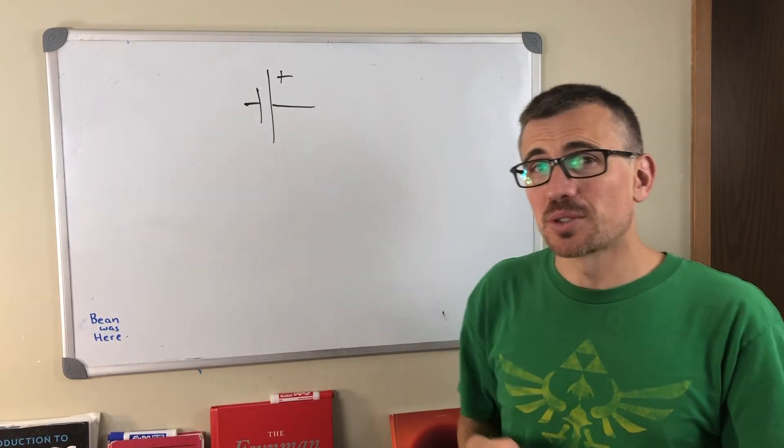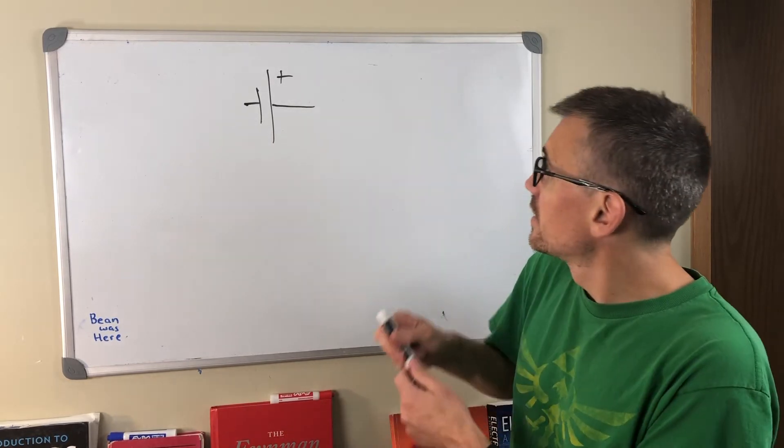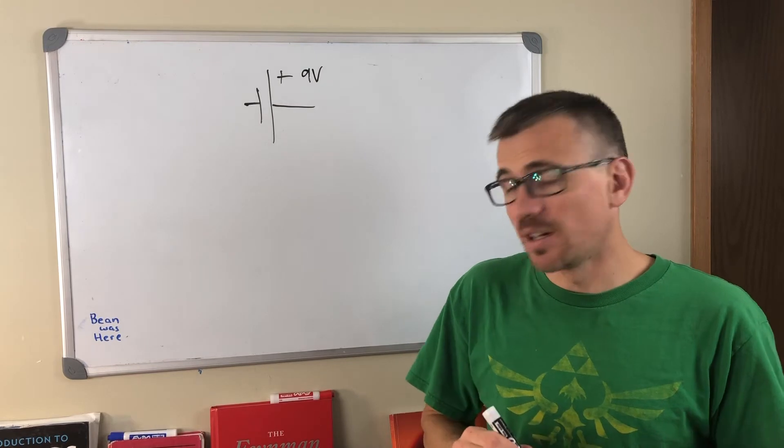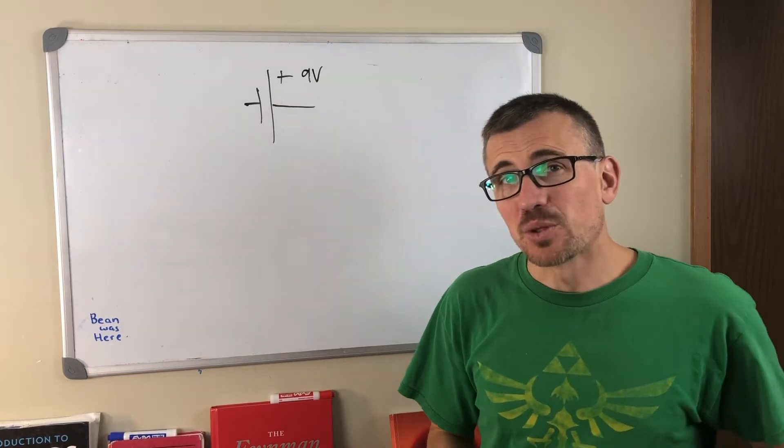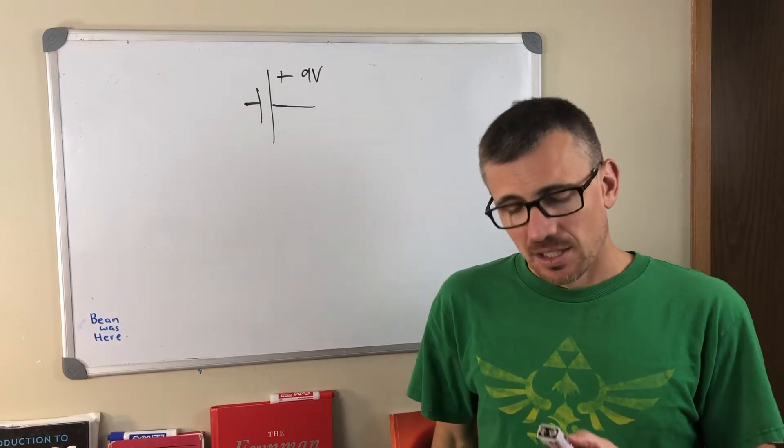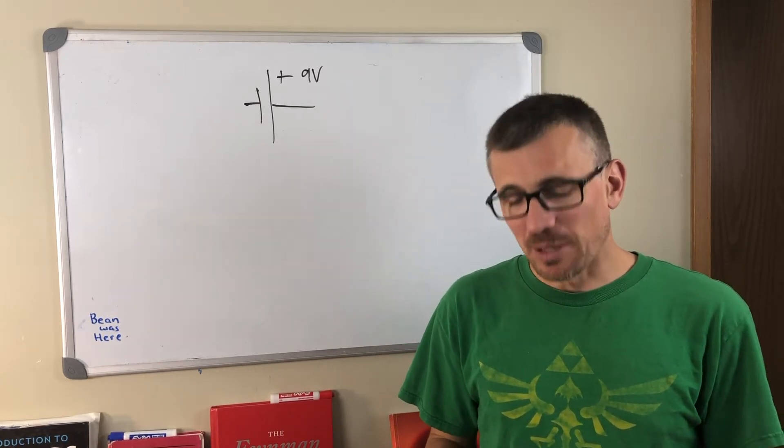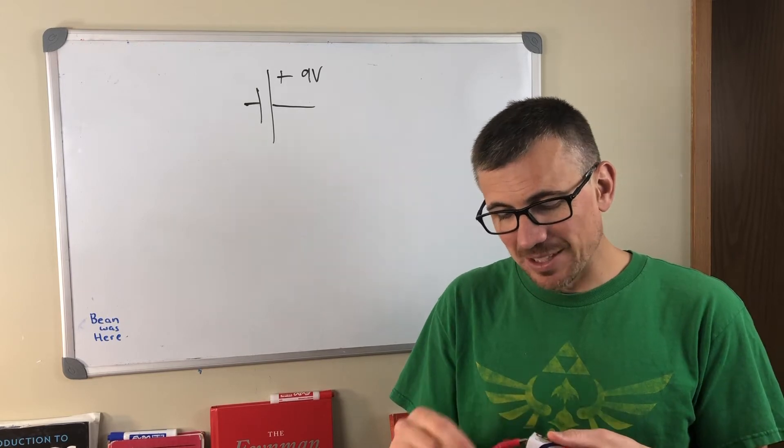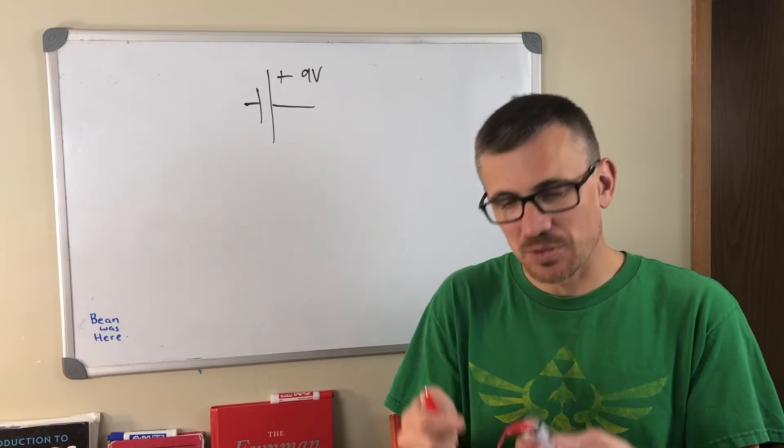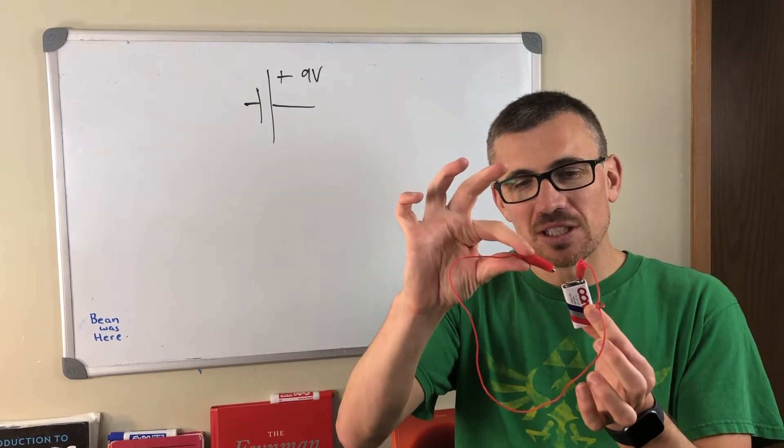An ideal voltage source like this will always maintain that fixed 9 volts of potential difference between the two points on its terminals. Let's think about where this might go wrong. I'm not going to actually complete the circuit, but I have in my other hand here, now attached with an alligator clip, a wire. What would happen if I shorted these two things out?